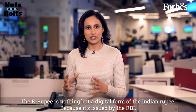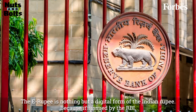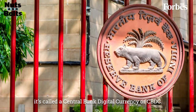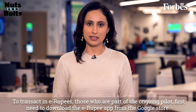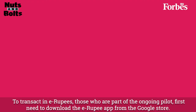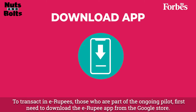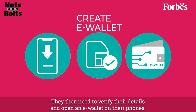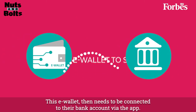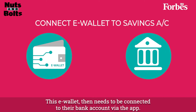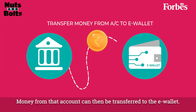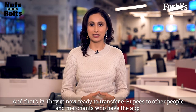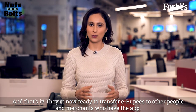The E-Rupee is nothing but a digital form of the Indian rupee. Because it's issued by the RBI, it's called a Central Bank Digital Currency or CBDC. To transact in E-Rupees, those who are part of the ongoing pilot first need to download the E-Rupee app from the Google Play Store. They then need to verify their details and open an E-Wallet on their smartphones. This E-Wallet then needs to be connected to their bank account via the app. Money from that account can then be transferred to the E-Wallet. They're now ready to transfer E-Rupees to other people and merchants who also have the app.